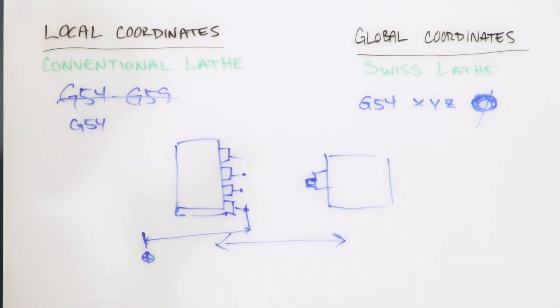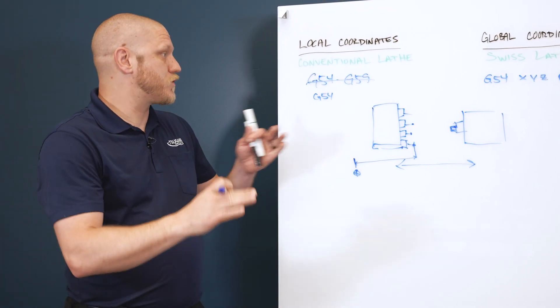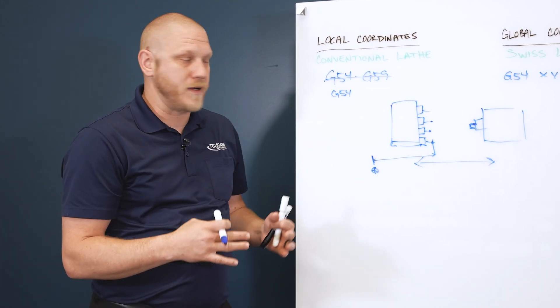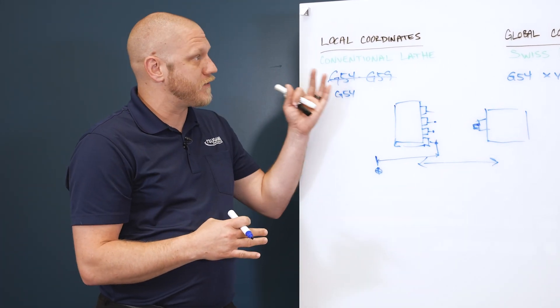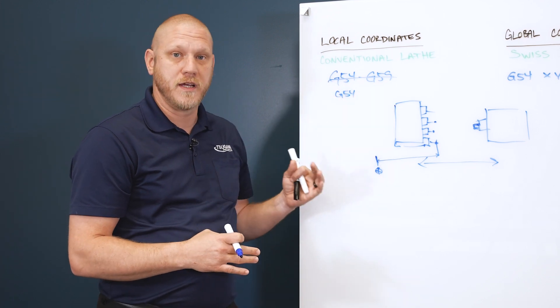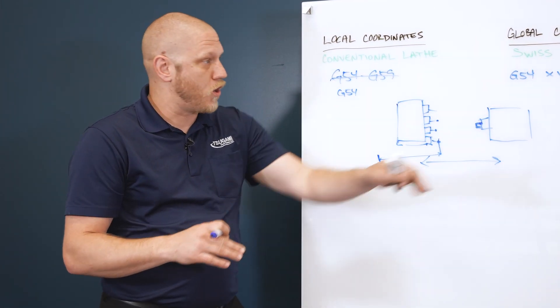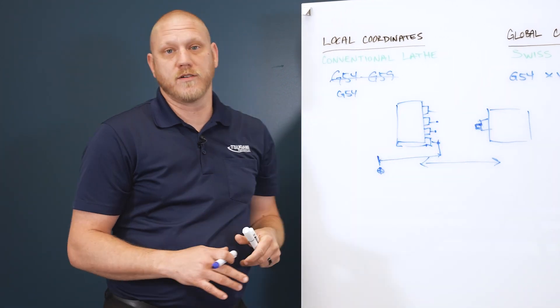So when you actually program, everything is based off of machine coordinates on a Swiss style machine. That is the difference between a conventional lathe and a Swiss lathe - the coordinate system itself is not a local coordinate system where you can adjust your work coordinates. It's global coordinates, so everything is always X, Y, Z zero in your G54.